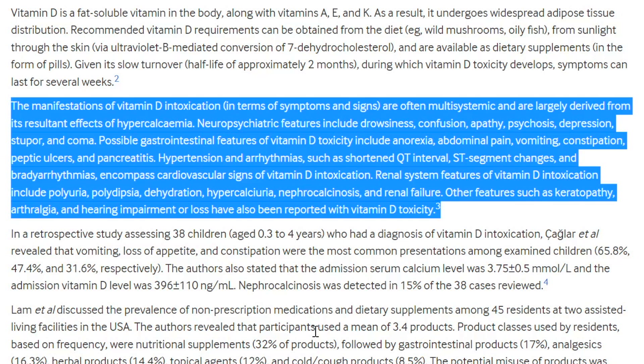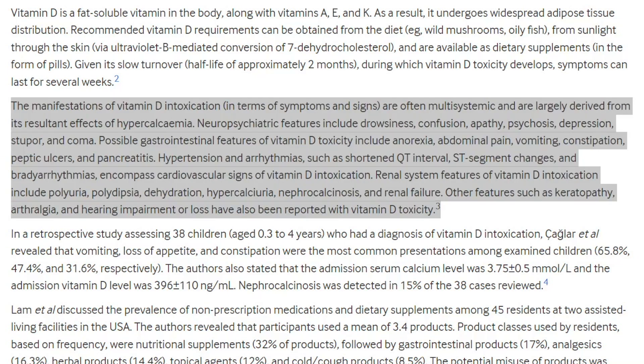Renal system features of vitamin D intoxication include polyuria, that means peeing a lot, polydipsia, that means drinking a lot, dehydration, hypercalciuria, that means a lot of calcium in the urine, nephrocalcinosis, that means kidney stones, and renal failure. Other features such as keratopathy, a disorder of the cornea, arthralgia, basically pain in your joints, and hearing impairment have been reported with vitamin D toxicity. Interestingly, this guy had hearing impairment or loss as well.